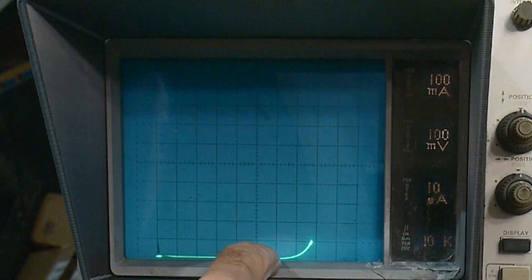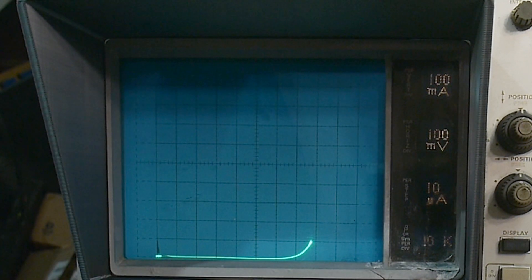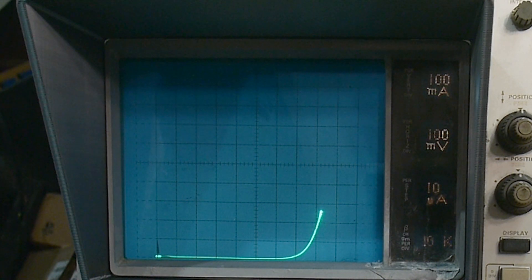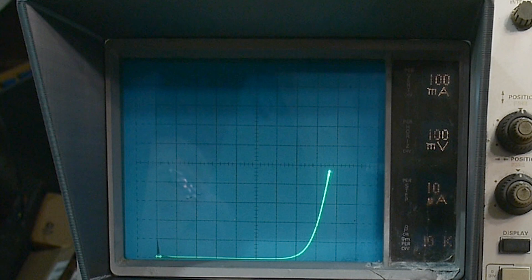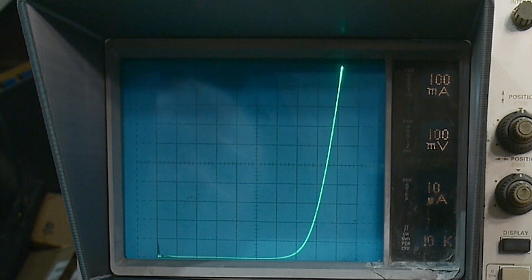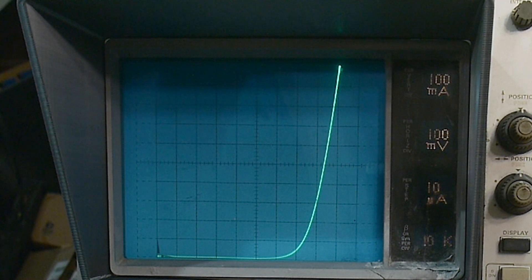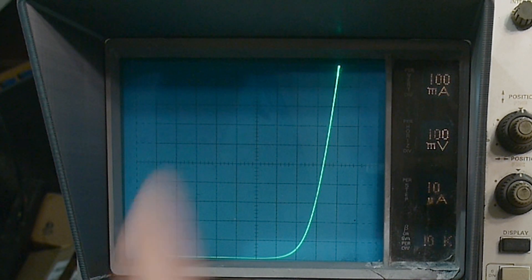Let's change our scale. Now we're at 100 milliamps per division. We'll go out to 100 milliamps. At 100 milliamps we're out at about 0.77 volts, but we need to go all the way up to 1 amp.